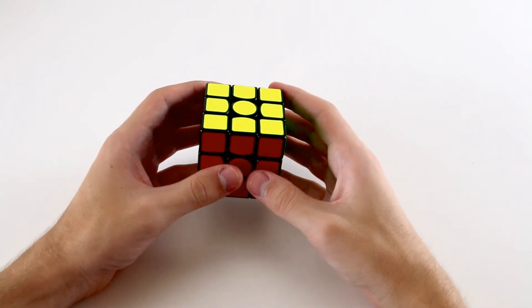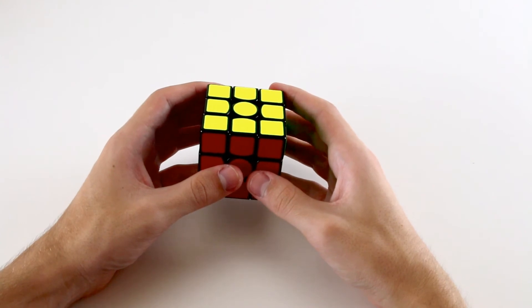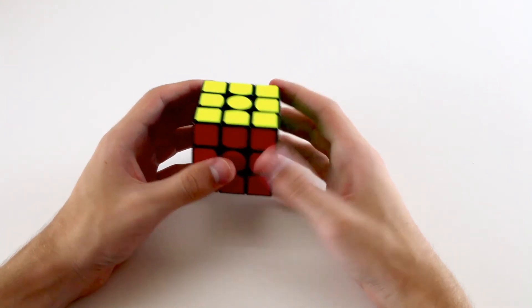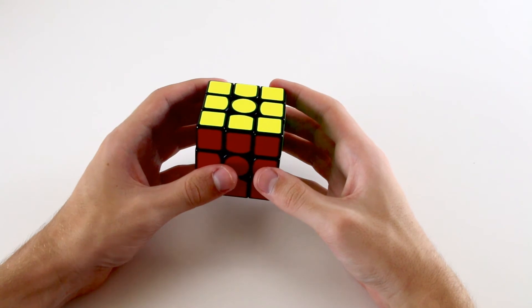If you can't do this even after you've known the algorithm for a long time, then I'd suggest experimenting with different finger tricks or even switching to a new algorithm entirely.